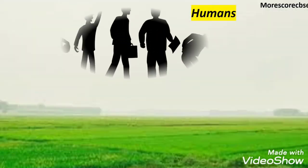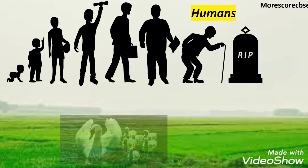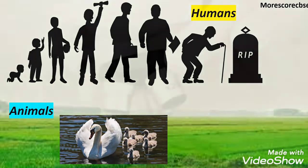Animals and humans are born as babies, then grow into kids, then adults, reproduce, and finally die.